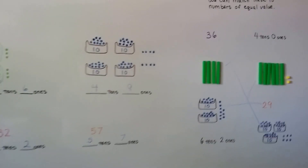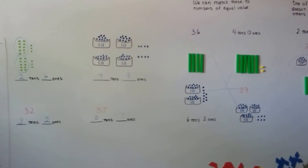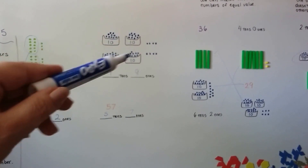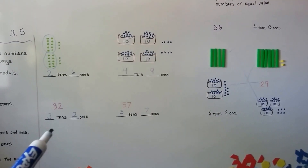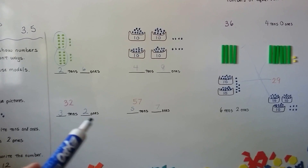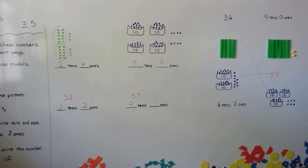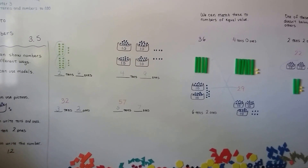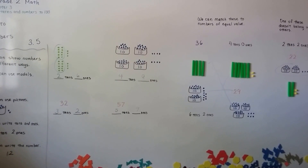So there are lots of ways we can show numbers. We can do it with counters — with longs of ten and single units. We can do it with groups of ten with pictures and ones. We can write how many tens and how many ones, and we can write it as a number like twelve, thirty-two, or fifty-seven. Those are all the different ways we can show the same number. All right, I'll see you next video — bye!